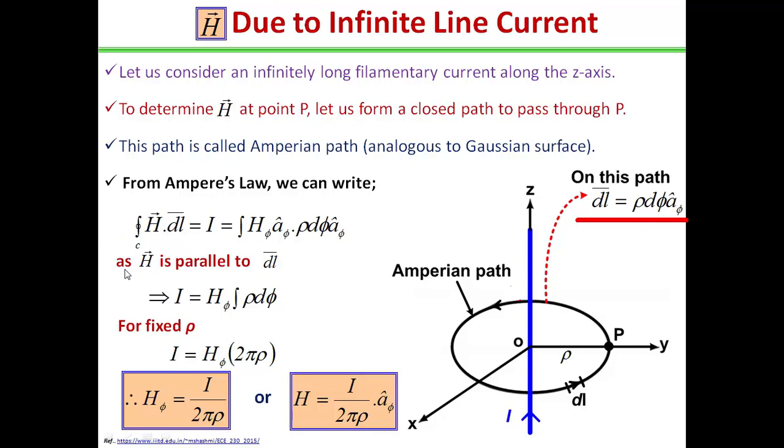And this will be equal to integral of H_φ a_φ dot ρ dφ a_φ. Here, the differential length dl is equal to ρ dφ a_φ, because in the case of cylindrical coordinate system, we know the differential length is R, which will be equal to radius multiplied by differential angle. So dl can be written as ρ dφ.